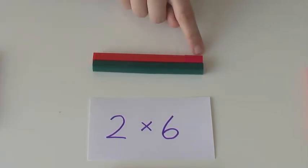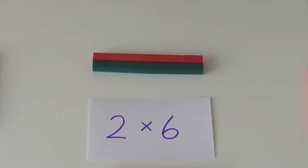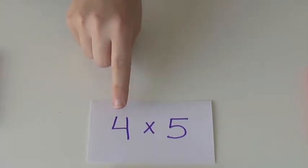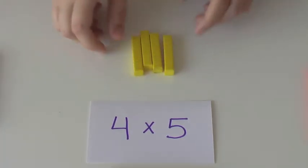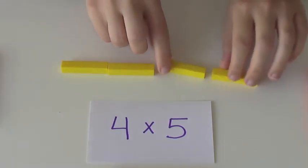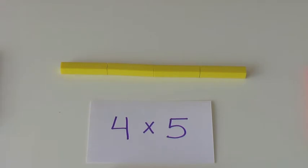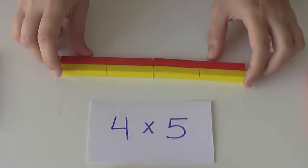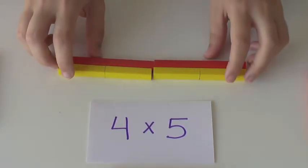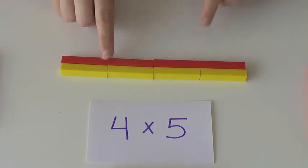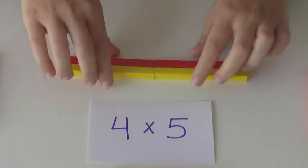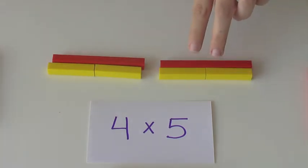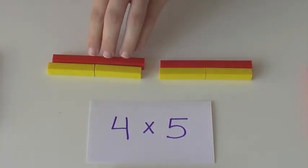For four times five, we're going to read that as four of five. So we need to grab four of the five rod. There's four of the five. Let's line them up and you can see that four of five is the same as twenty - ten and ten. Another thing that will naturally happen as children use the rods to do multiplication is they will begin to intuitively understand the distributive property. So they'll see something like this and they'll notice, oh well, two fives is ten, so four fives must be twenty.